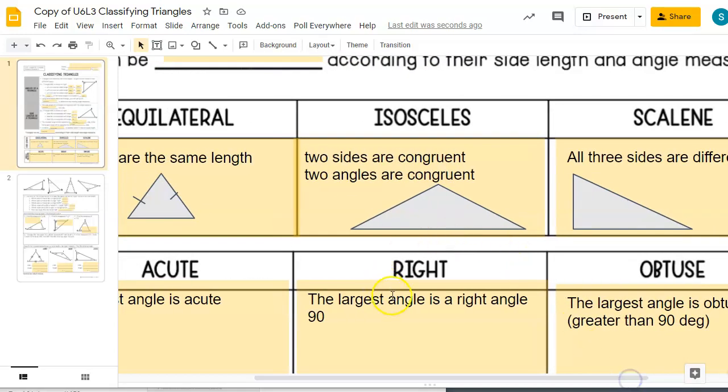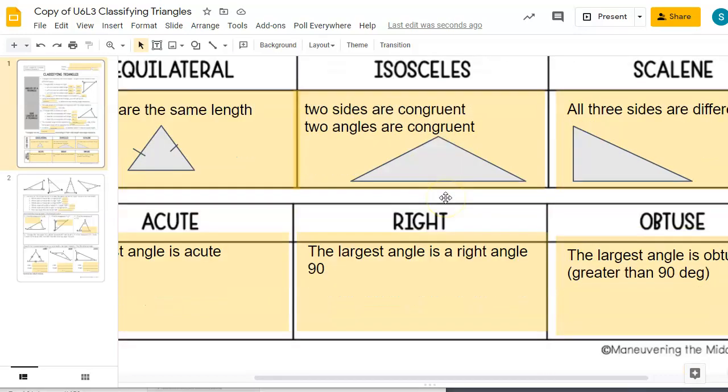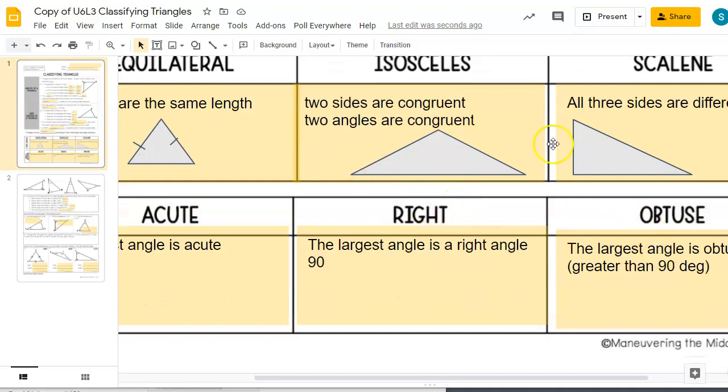We could have a right triangle that's scalene. For example, this one. We could have a right triangle that's isosceles. So it can be in both an angle category and a side length category. And we're going to look at those in the next one and try to figure out some more information about them.